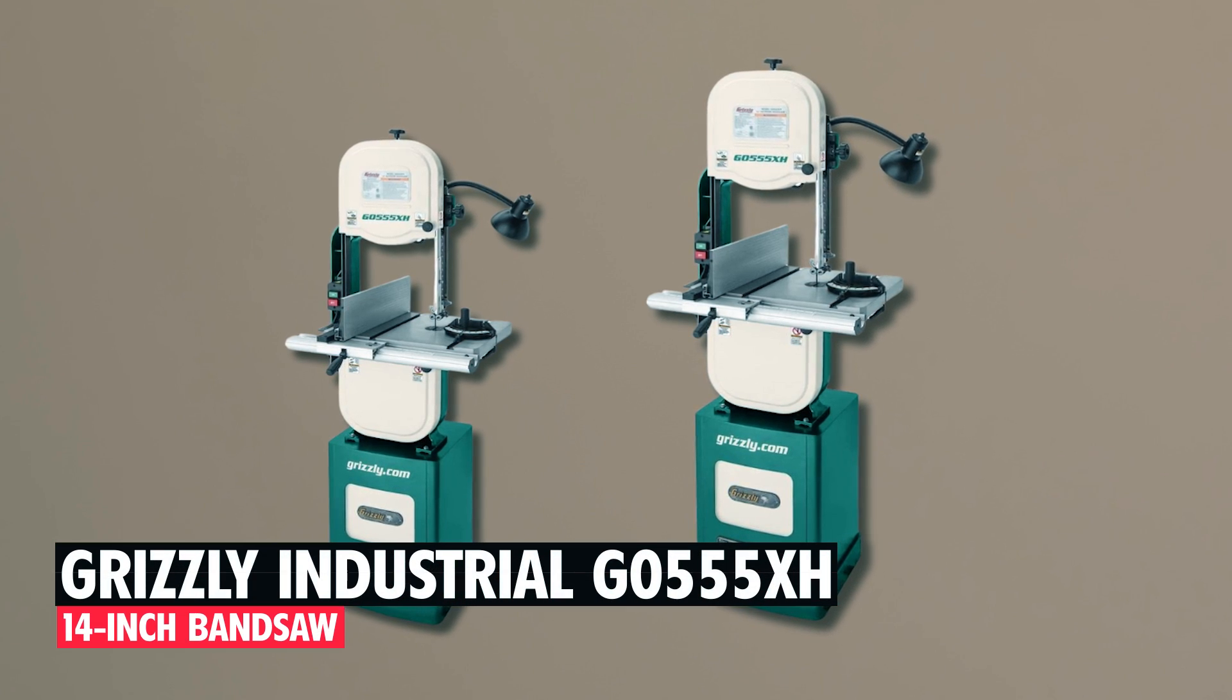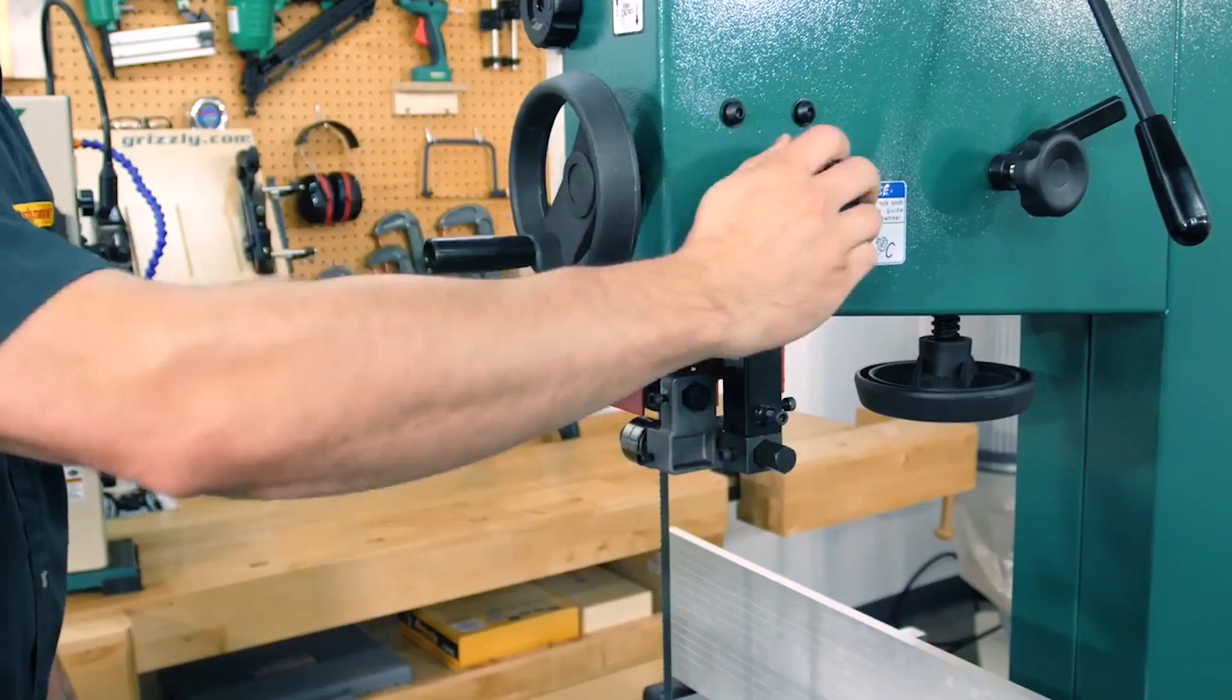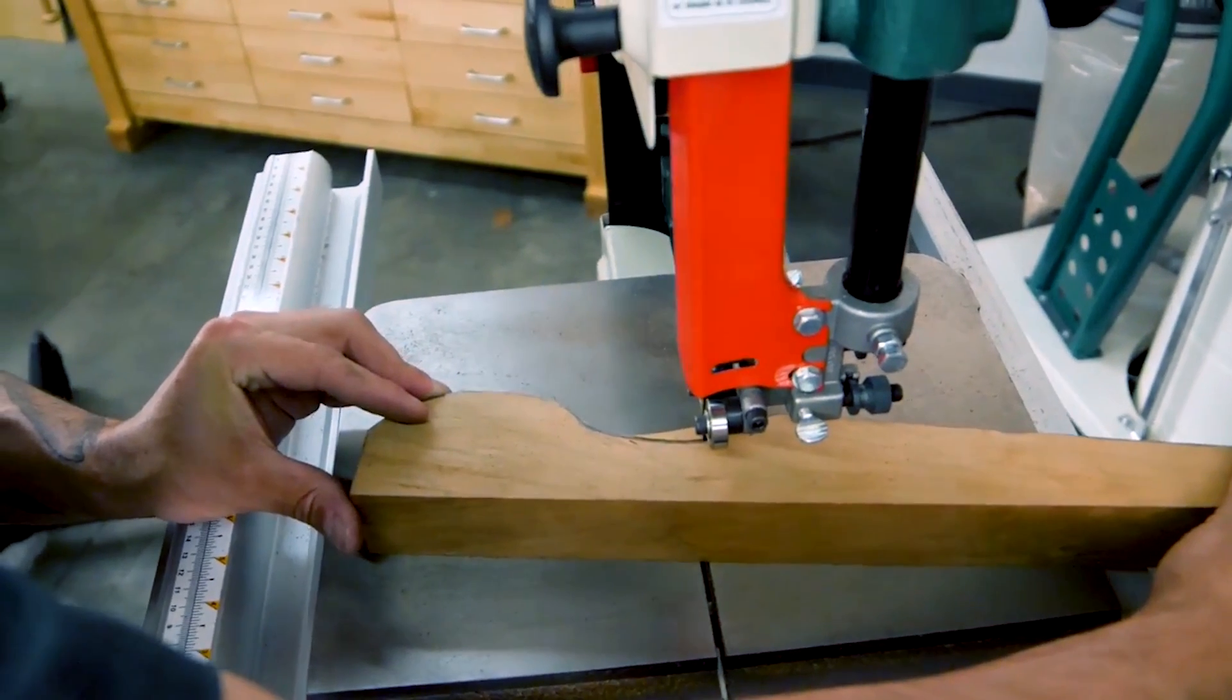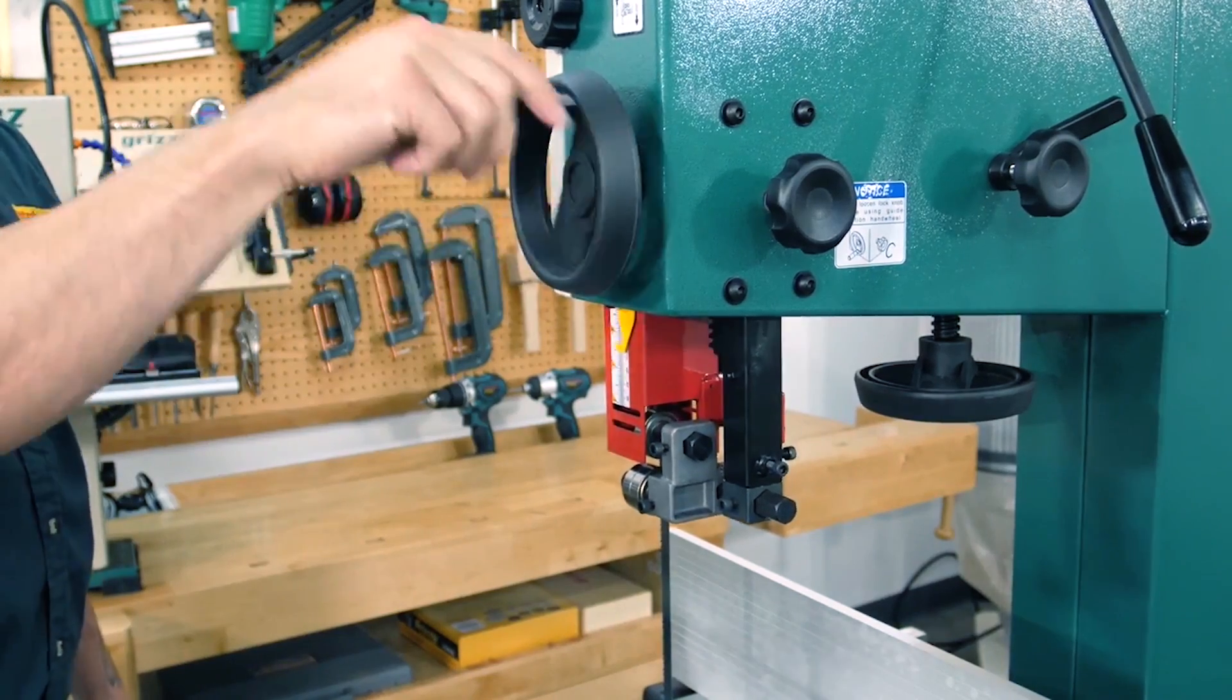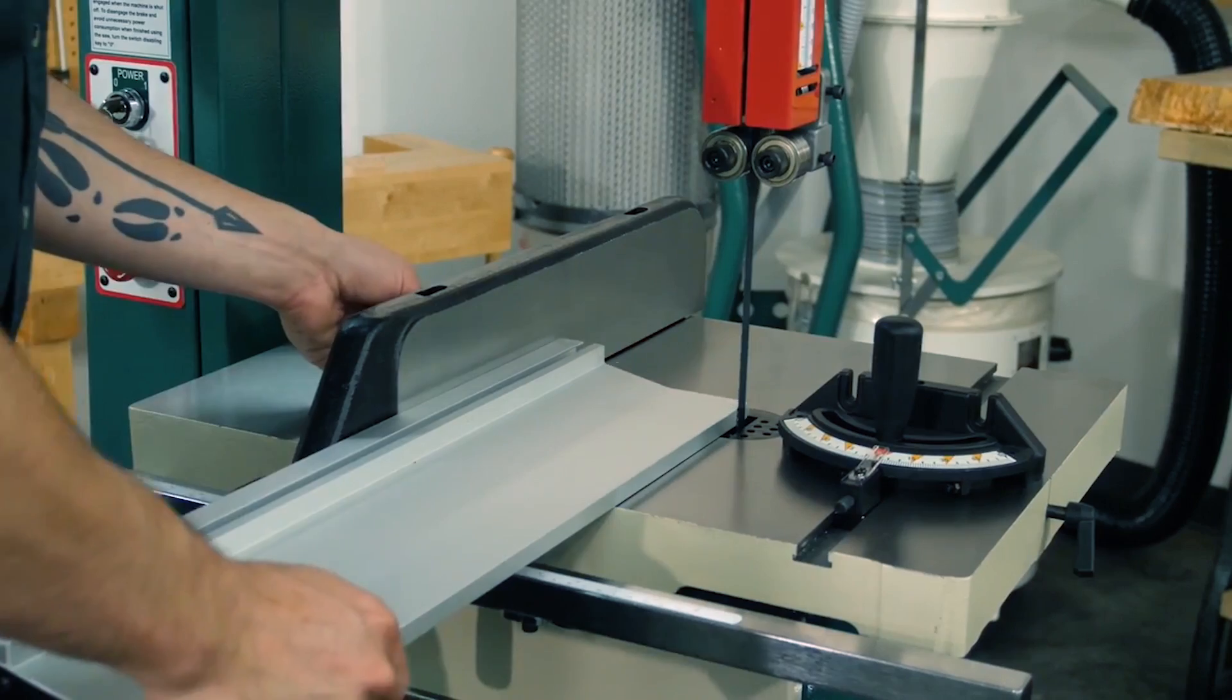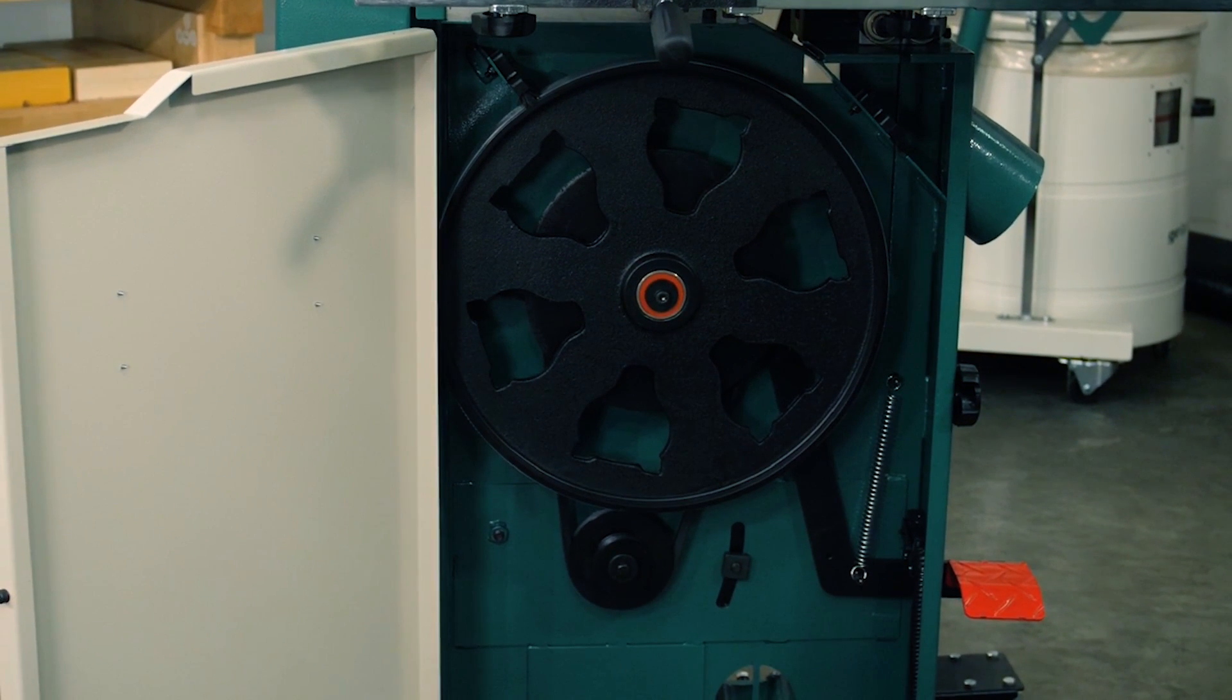Grizzly Industrial G0555XH 14-inch Bandsaw. For tackling larger wood sections with ease, the Grizzly Industrial G0555XH 14-inch Bandsaw stands out. Powered by a robust 1.75 HP motor, it excels at re-saw cuts up to 12 inches thick without requiring a riser kit. Featuring computer-balanced cast iron wheels, rack and pinion guideposts, and a removable 6-inch re-saw fence, it offers precision and versatility. The saw's stable build on a heavy-duty stand, along with advanced components like ball-bearing blade guides, positions it as a reliable and CSA-certified choice for woodworking projects.